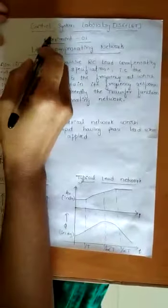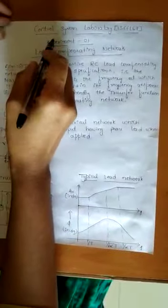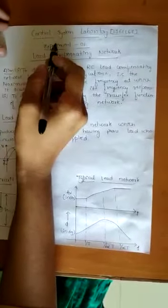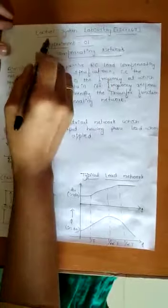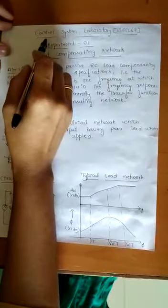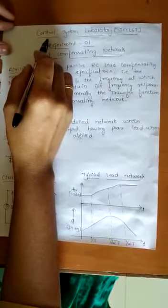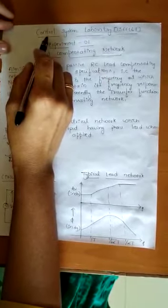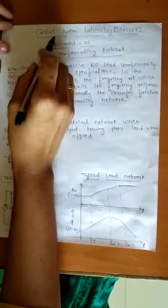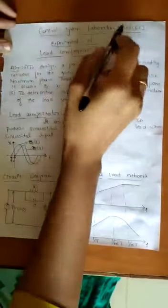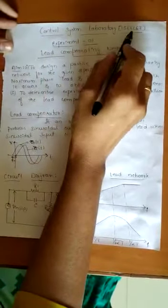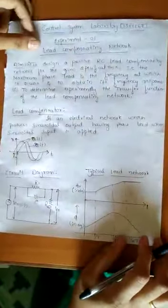Hello everyone, myself Amulya Hachaji, assistant professor from the AAA department at Saividya Institute of Technology. Today we are giving a demonstration on a control system laboratory. The subject code is 15WEL67. Today we are demonstrating the first experiment, which is the lead compensating network.